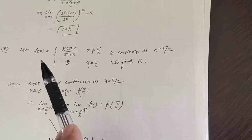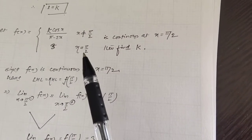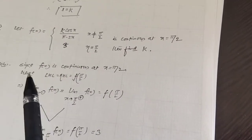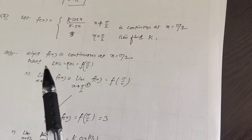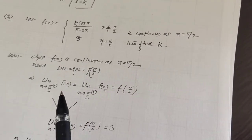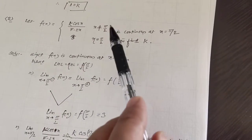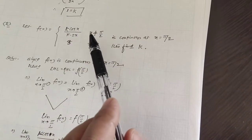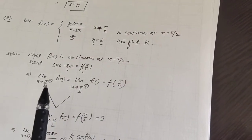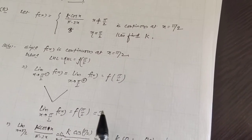Let us take another example. Let f(x) equal k·cos(x) divided by (π minus 2x) when x is not equal to π/2, and f(x) equals 3 when x equals π/2. This function is continuous at x equals π/2; find the value of k. Since f(x) is continuous at x equals π/2, the left-hand limit, right-hand limit, and the value of the function at π/2 must all be the same. The function is the same on both sides, so: limit x tends to π/2 of f(x) equals f(π/2) equals 3.